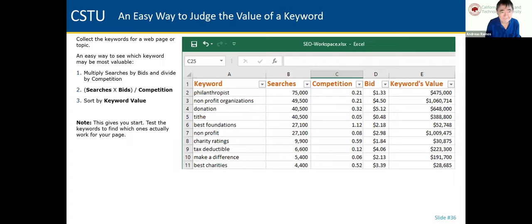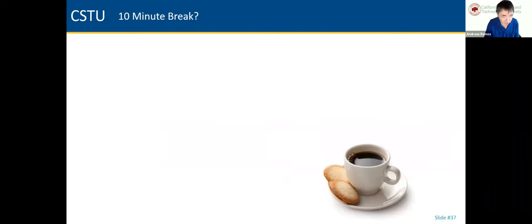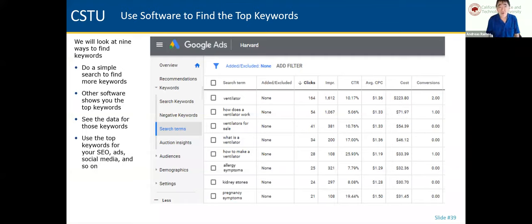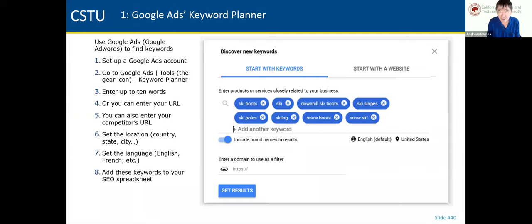Now let's go through the software to find keywords — nine different ways. The first: Google Ads itself, formerly called Google AdWords. Google Ads has one of the best tools available called the Keyword Planner. Sign up for a Google Ads account — it's free and you don't have to enter a credit card — and use the tool for free.